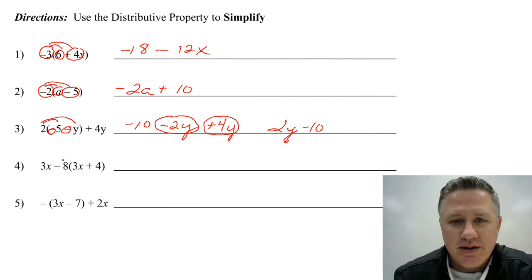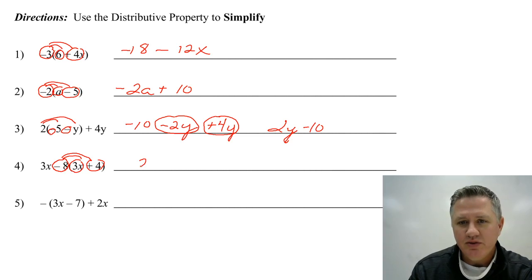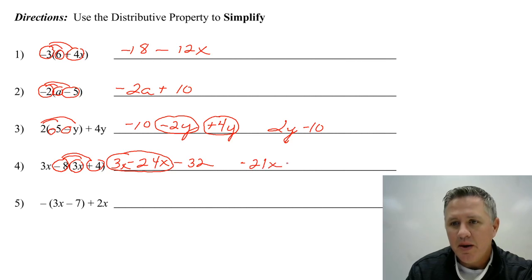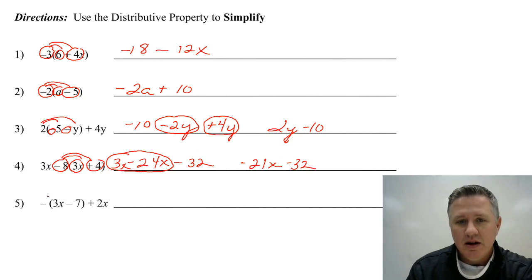Number four, what are you distributing? You are distributing the negative eight. Some people are just going to distribute positive eight. Be careful. So eight times 3X is 24X. Eight times four is 32. The opposite is a negative, and the opposite makes that a negative. Now it comes down 3X. So now I'm going to combine these like terms. What's 3X minus 24X? That's negative 21X minus 32. You can't combine those just like up above because they're not alike.